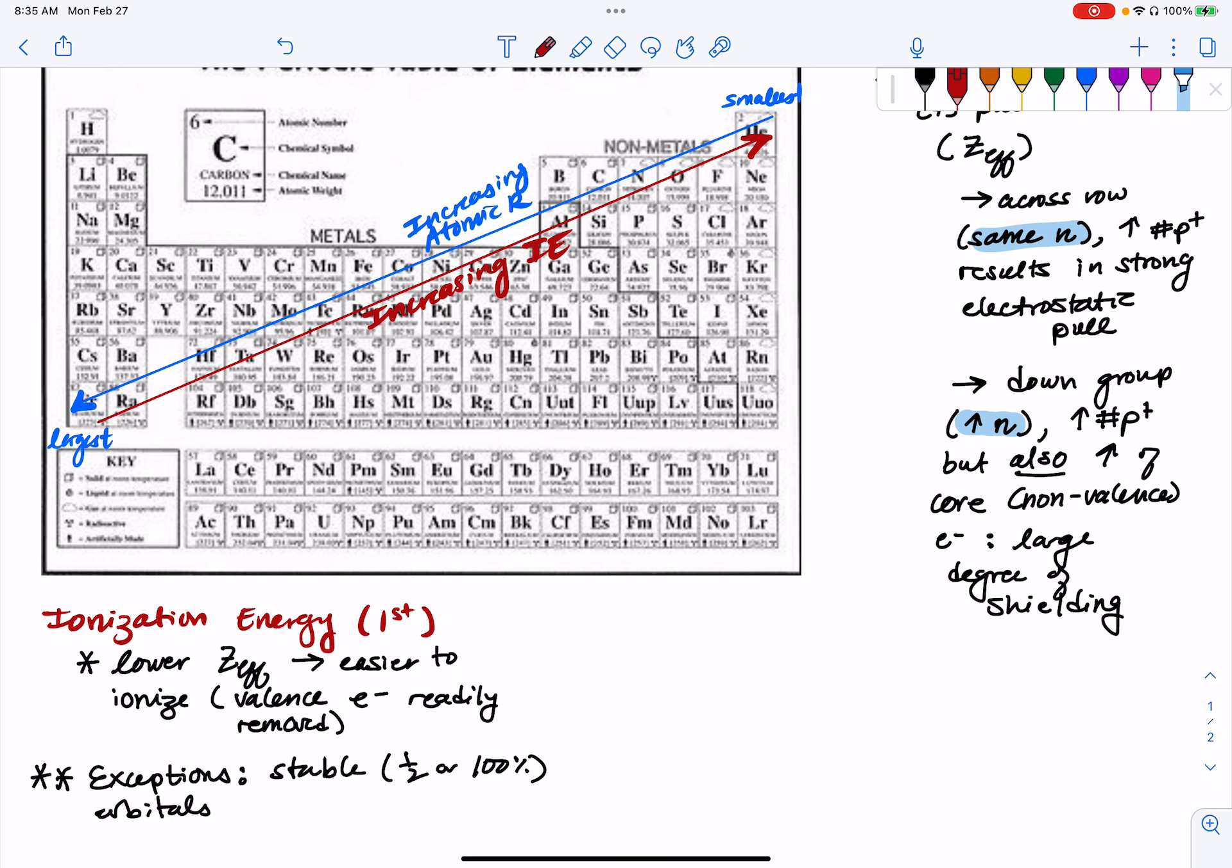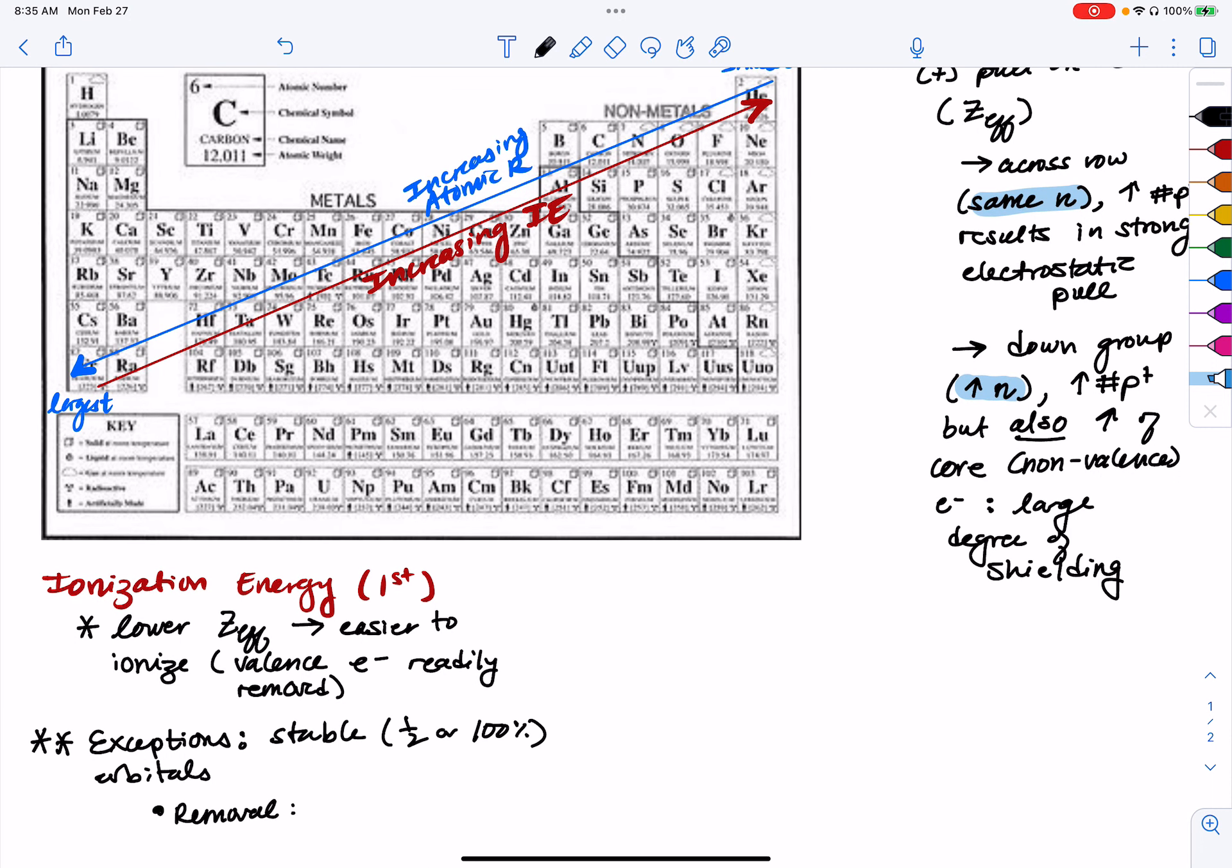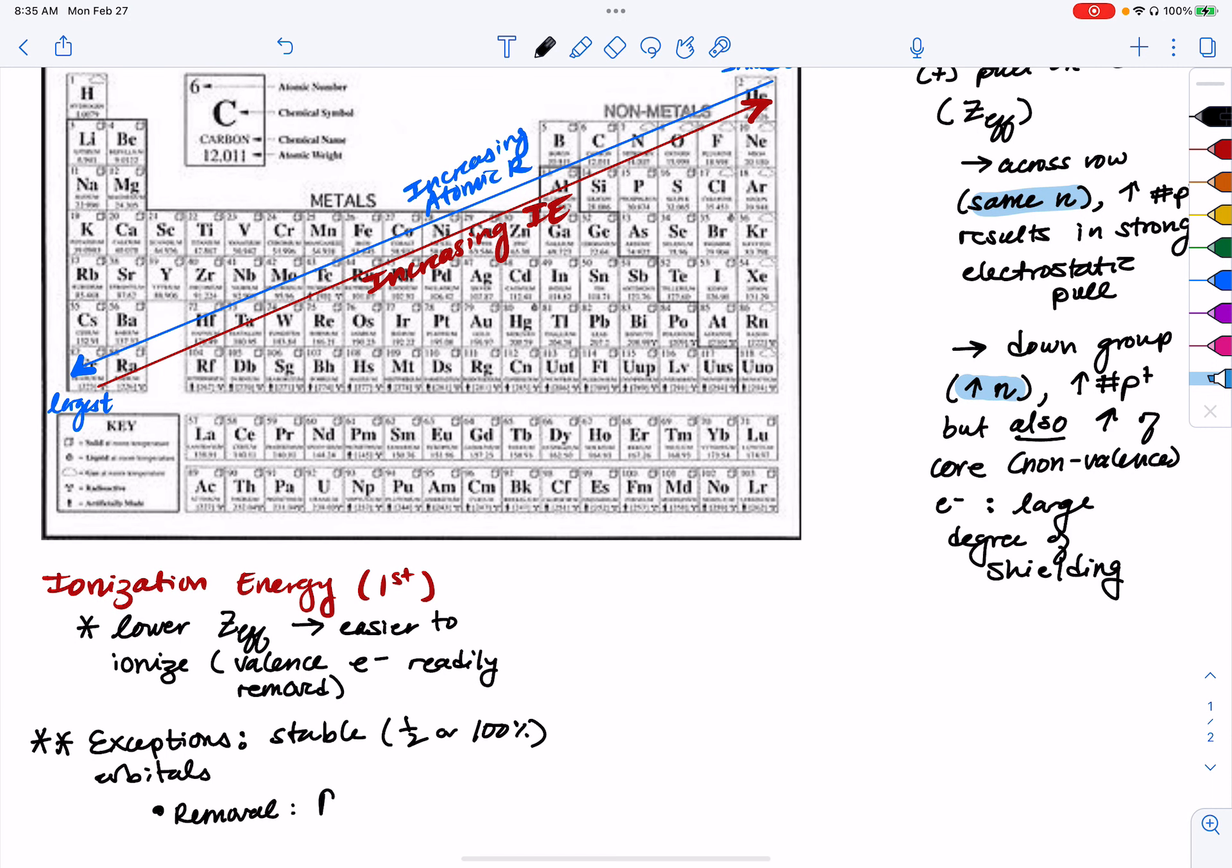If you want to figure out the trends in second ionization energy, you're going to have to look at your electron configuration. So just remember that the removal order from where we remove electrons, from what orbitals first, when we're talking about creating electron configurations for ions, is first the P, the outermost P, then the outermost S, then the outermost D, then the outermost F.